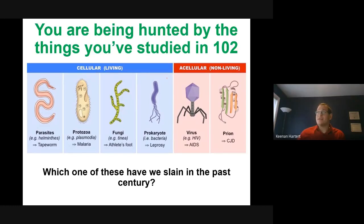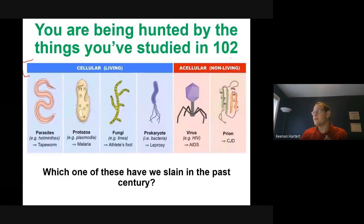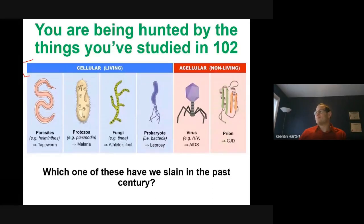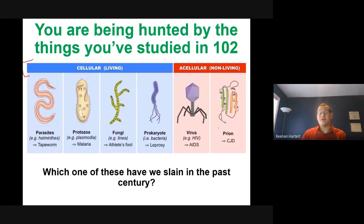You'll notice that pathogen — all of these things we're looking at — these are pathogens. You have things that are non-living, such as prions and viruses. Prions are basically proteins that fold things wrong, and we'll see why the immune system has very few defenses against something like that. You also have living things that try to make your body their home — not necessarily to kill you, but they may consequently kill you or make you unhealthy.